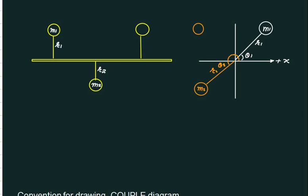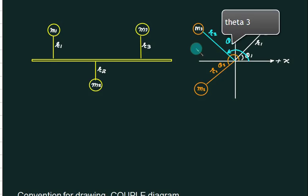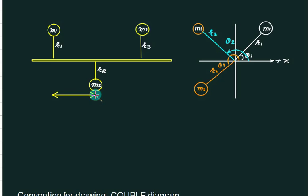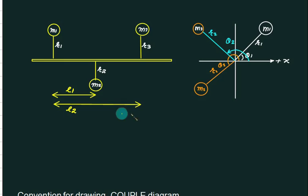We also have a third mass m3 at radius equals to r3. The distance between these two planes is l1 and the distance between these two planes is l2. The reference plane is taken here, so this distance is l1. From here, another transverse plane is at distance l1, and the perpendicular distance between the transverse plane and the planes of r1 and r3 is l2.